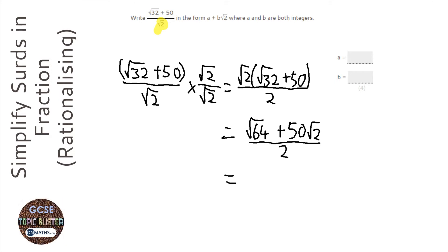So then the square root of 64 is 8, and then let's divide both of these things by 2, because that's the same as saying 8 over 2 plus 50 root 2 over 2. So you can break that up into two different fractions.